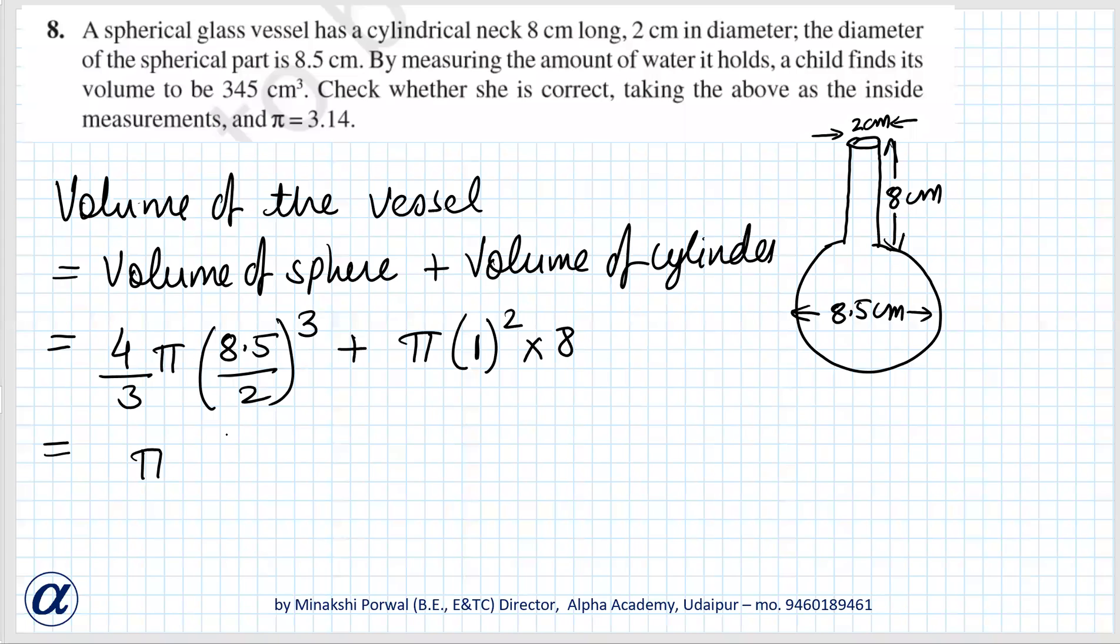π we can take outside. 4/3 into 8.5/2 is actually 4.25. So we can write 4.25 × 4.25 × 4.25. What we have done? We have taken this π and this π outside, rest everything is inside the bracket. Plus 8.